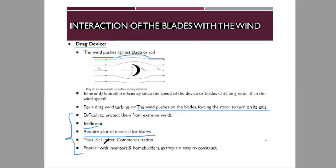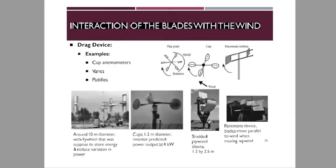Drag devices lead to limited commercialization because if they are complex and inefficient, the disadvantages outweigh the benefits. They are popular with inventors and home builders as they are easy to construct. Examples of drag devices include the cup anemometer, vanes, and paddles attached to the wind turbine.